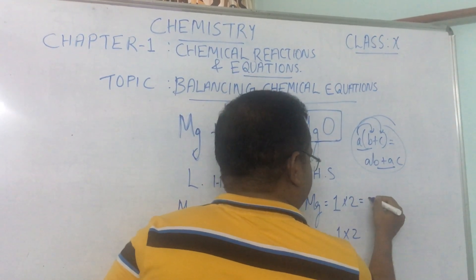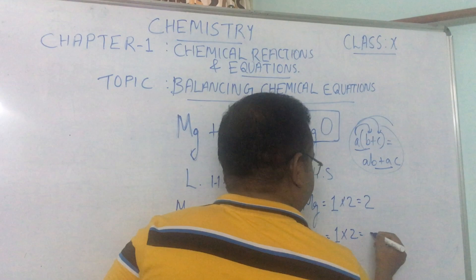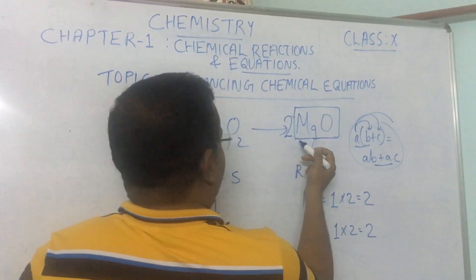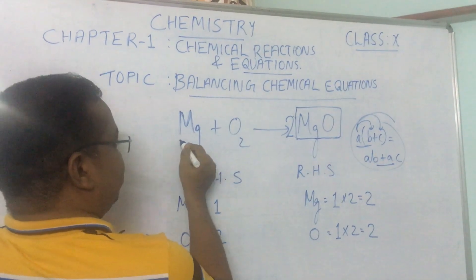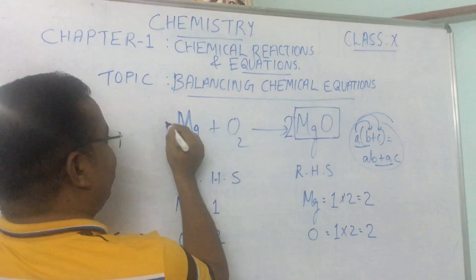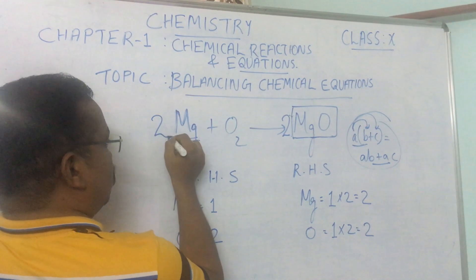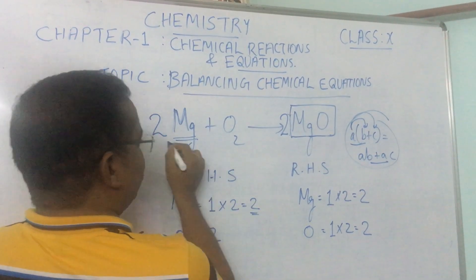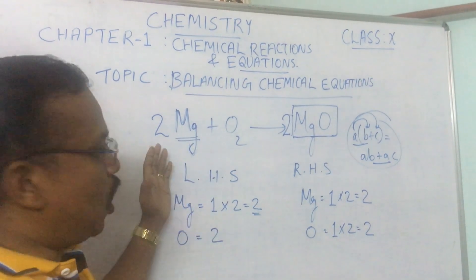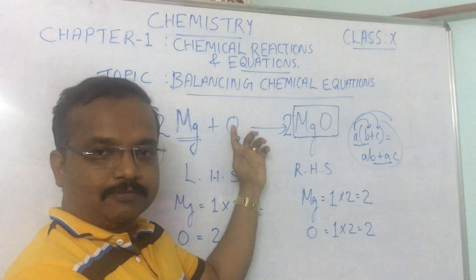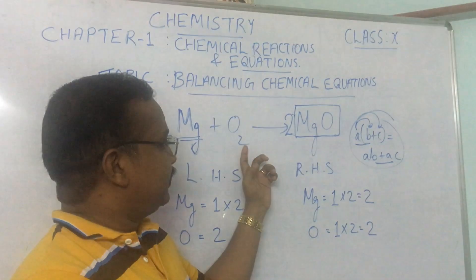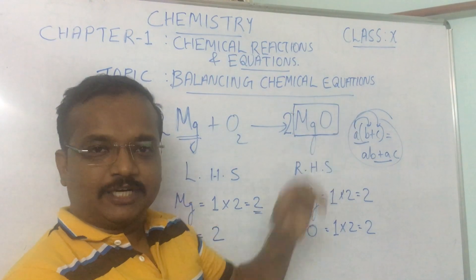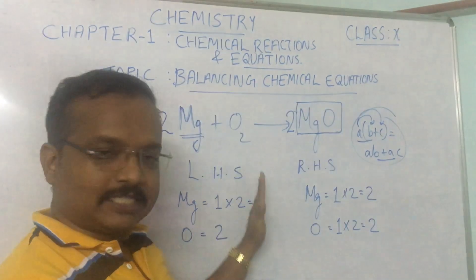So two multiplied gives us two MgO molecules. Now on the left hand side we also put a coefficient two before Mg, giving us two atoms of magnesium. So one molecule of oxygen reacts with two atoms of magnesium to form two molecules of magnesium oxide.